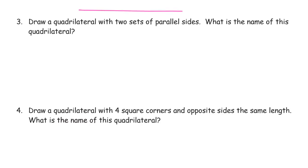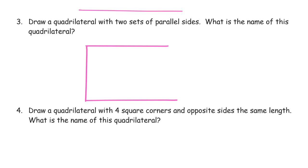Draw a quadrilateral with two sets of parallel sides. What is the name of this quadrilateral? Two sets of parallel sides means the top and bottom are going to be parallel and the left and right are going to be parallel to each other. This is a rule: when you have opposite parallel sides like this, they are also equal length.